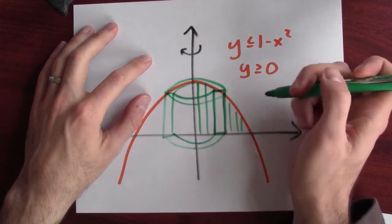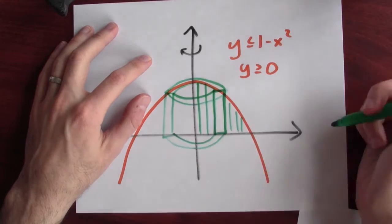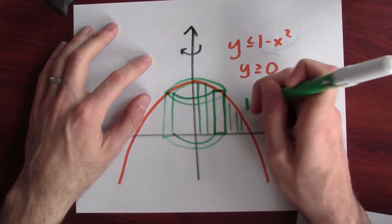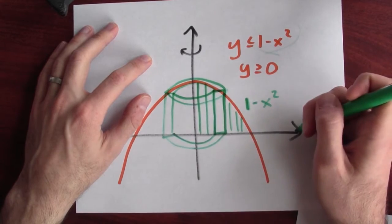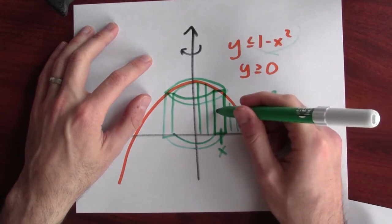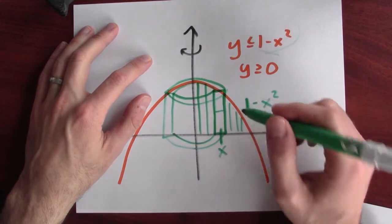Now how tall is this shell? Well, the height of that shell is given right here, and right here, it's 1 minus x². The radius of this shell is x, and the thickness of that shell is dx.